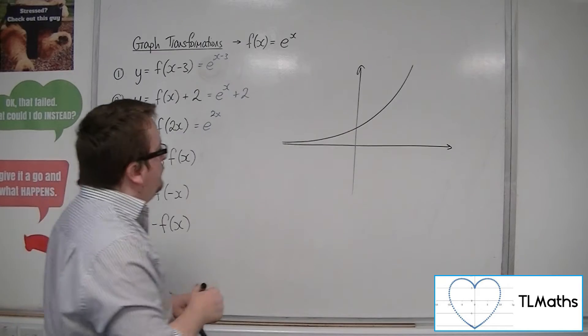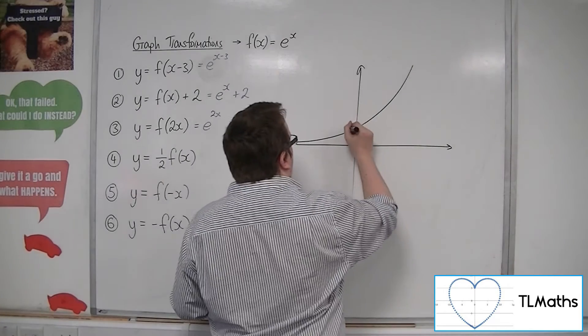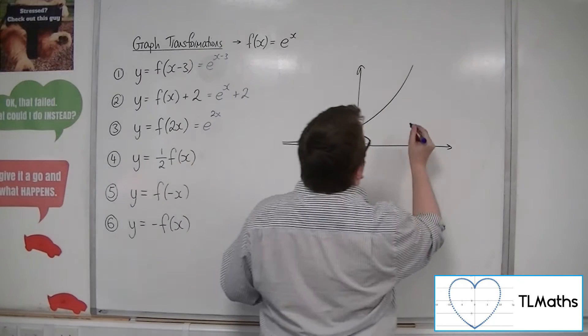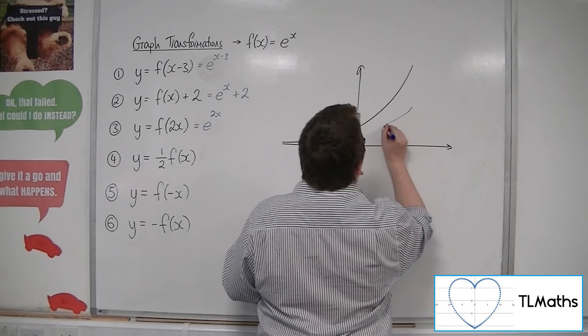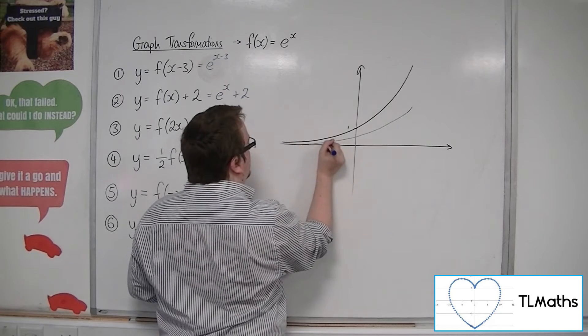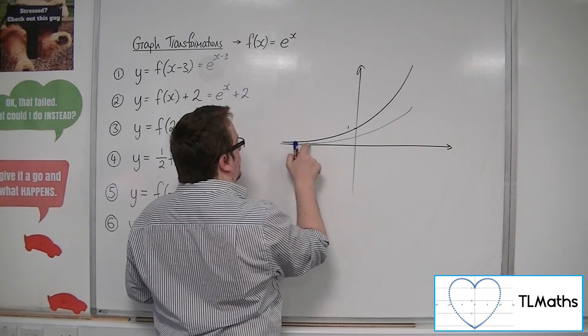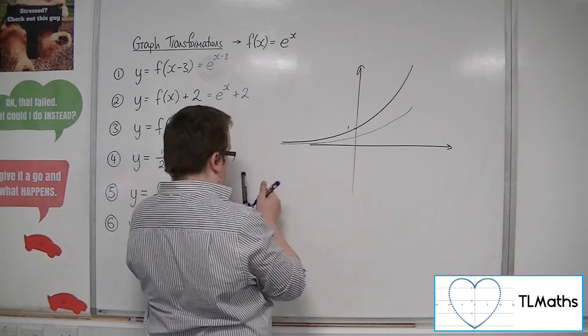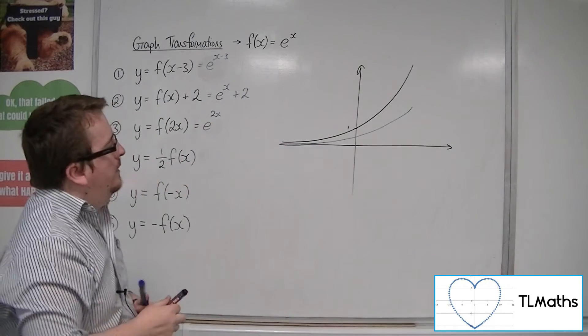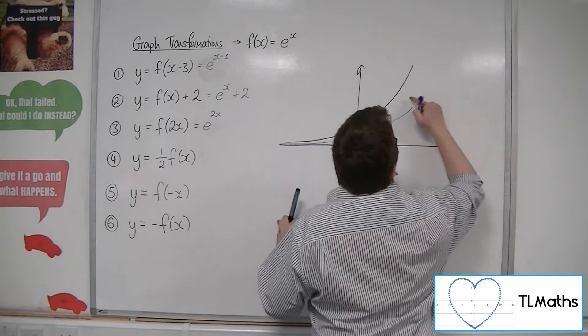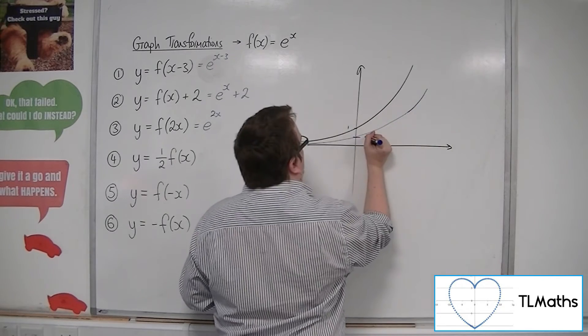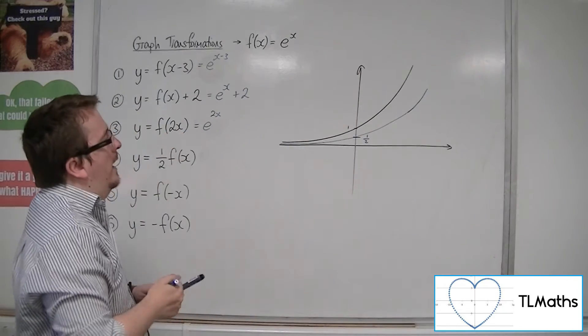So, if I halve all of the y-coordinates, it would now look something like this. Just going to sort that bit out. Got to be very careful with your sketch to make sure that it doesn't end up crossing the x-axis. And it's crossing through a half on the y-axis.